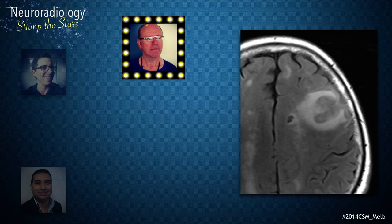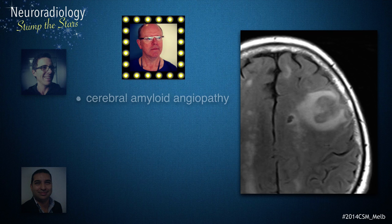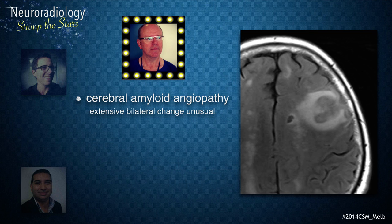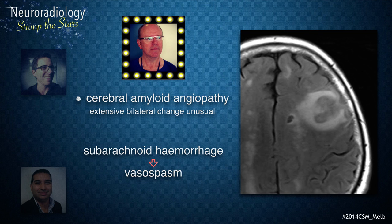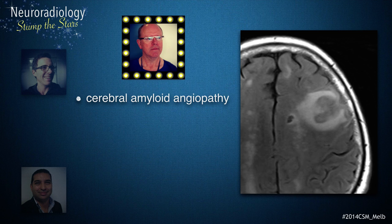The superficial staining of the cerebral cortex and sulci with haemosiderin is a key aspect to narrowing the differential diagnosis. While this can happen with amyloid angiopathy, such extensive bilateral change would be unusual. We have seen patients presenting in a delayed fashion after subarachnoid haemorrhage who then also have vasospasm-related areas of subacute cerebral infarction, and that could be further investigated on MRA and on history. Putting it all together, amyloid angiopathy with prior haemorrhages or a vasculitis would be my favourite diagnosis.